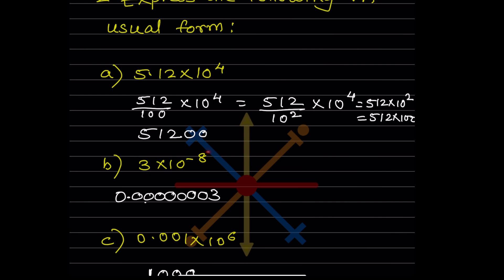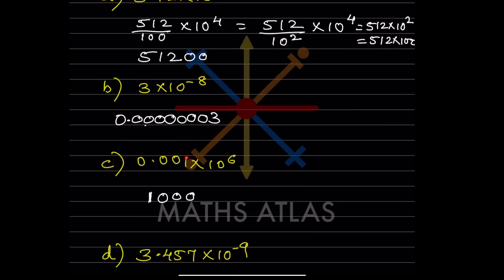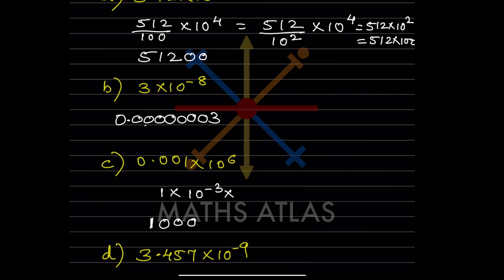For a number like 3 × 10^-8, to write in usual form we go in reverse order. Writing 3, and counting 1, 2, 3, 4, 5, 6, 7, 8 places backward, putting the decimal there. As an intermediate step: 1 × 10^-3 × 10^6 = 1 × 10^(6-3) = 10^3 = 1000.